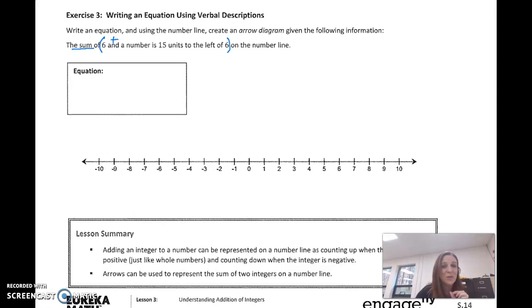Okay, 15 units to the left. If it's 15 units to the left, that's going to be a negative 15, isn't it? So I'm going to add 6 plus a negative 15, and that's going to give me my sum, my solution, my answer, my result. Don't know what it is, so I'm calling it X.